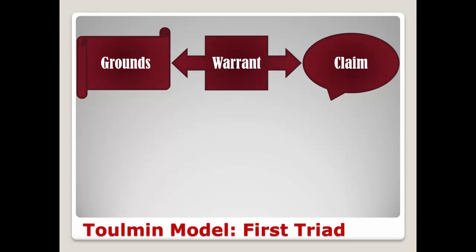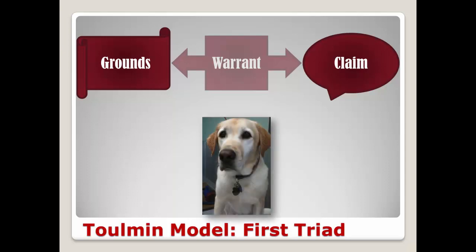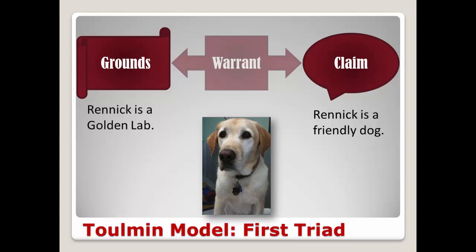Now, the warrant is what connects the claim to the grounds. It's the inferential or mental leap that connects the two. Generally, the warrant is implicit, meaning that it is unstated. In one way, it allows the receiver to be involved in the argument — what some call message co-creation. If you met my daughter's dog, Grennick, for example, you would likely conclude that he is friendly — that's the claim. The grounds might be that he is a golden retriever lab mix, or that he's a service dog.